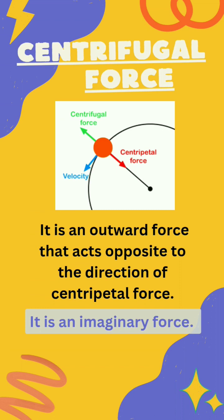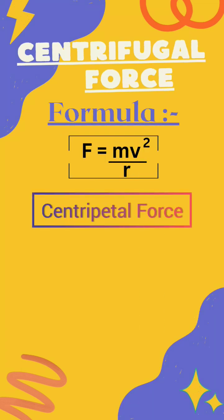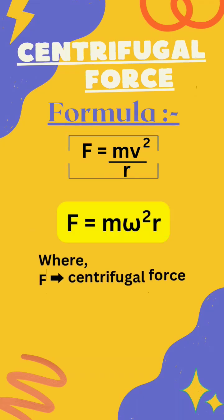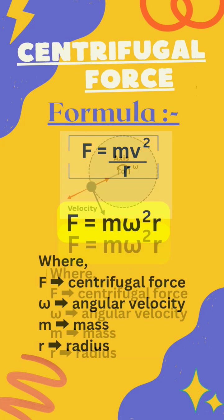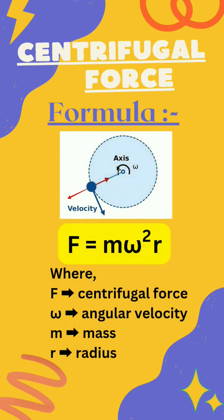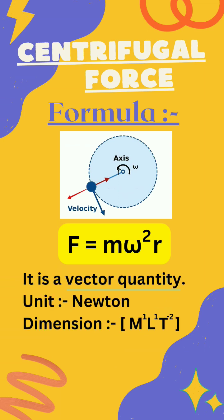It is an imaginary force. Its formula is the same as that of centripetal force, and can also be written as F equals m omega squared r, where F is the centrifugal force and omega is the angular velocity. It is a vector quantity and its unit is Newton. Its dimension is MLT to the power minus 2.